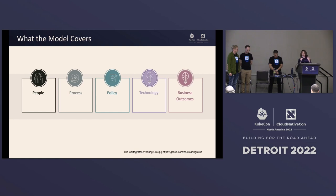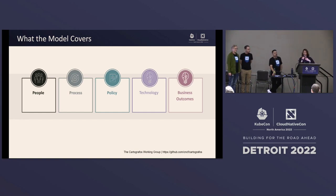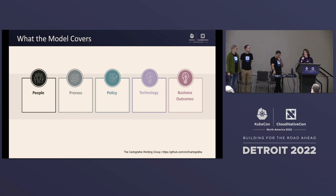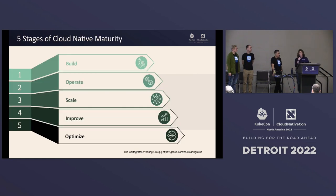We also try to be technology-agnostic and avoid being a king-maker in the industry, though we do make some references to CNCF projects as a frame of reference. As we were developing the maturity model, some key themes emerged: people, process, policy, technology, and business outcomes. Throughout this conference we've been hearing a lot about these. We cover all five themes within every level of the model — looking at how people need to shift culturally, what processes you need, what CI/CD pipelines, what compliance standards, and what the business outcomes are.